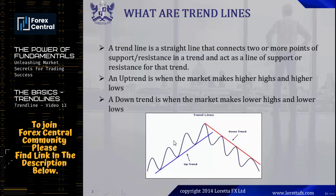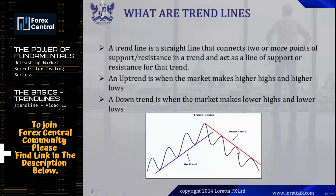In the uptrend you can see higher highs and higher lows. In the downtrend we have lower lows and lower highs. The lows in the uptrend are support and the highs are resistance. In the downtrend, these highs are resistance and these lows are support. So a trend line is a straight line that connects two or more points of support or resistance in a trend, and acts as a line of support or resistance for that trend.